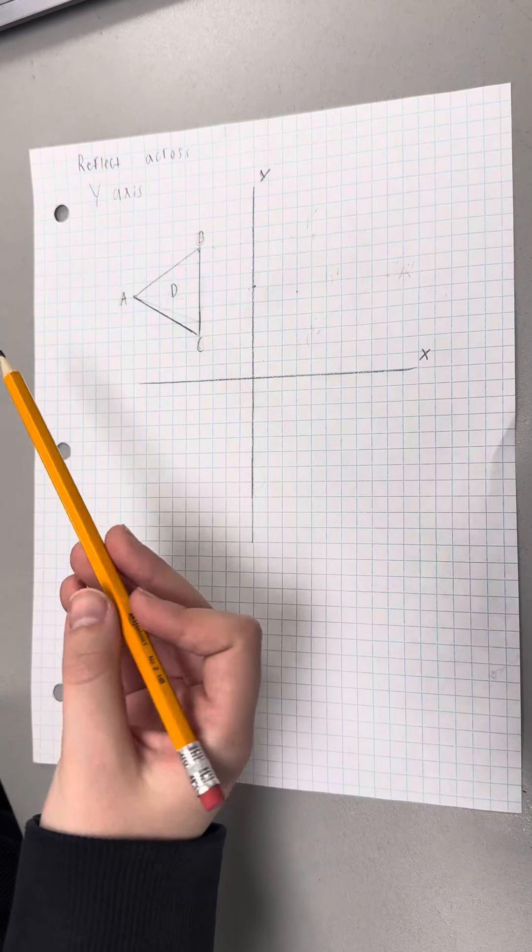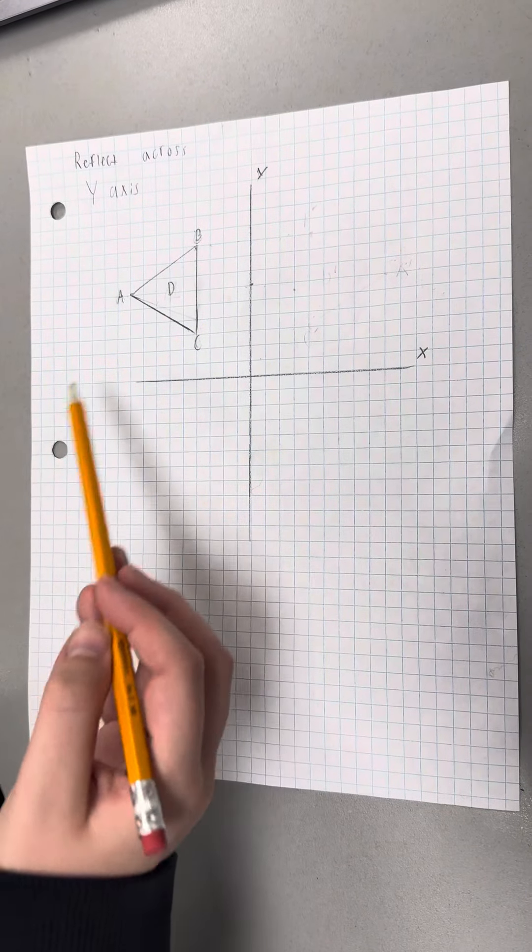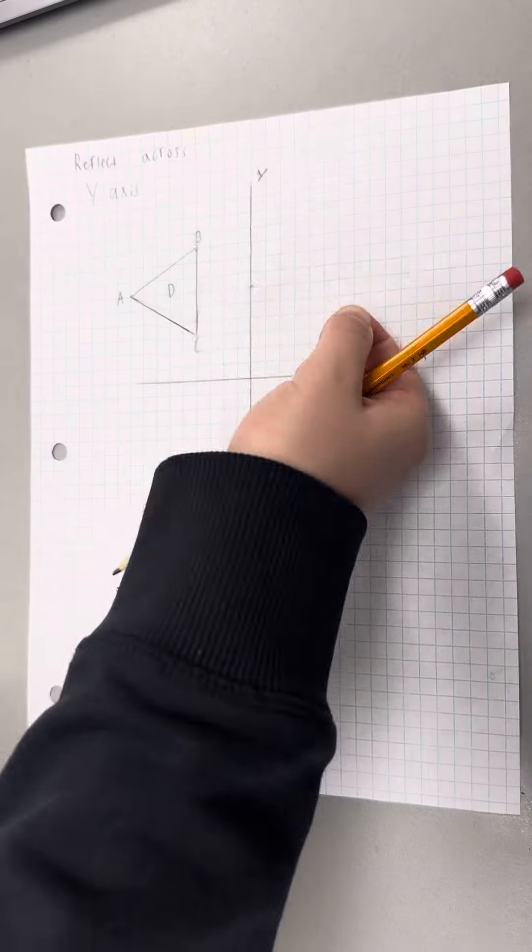So let's basically flip the shape over and it's kind of like grabbing point A and flipping it over.